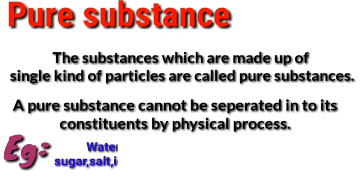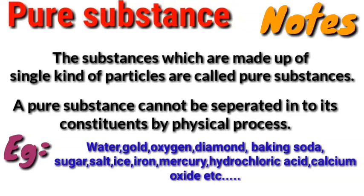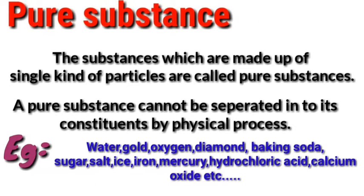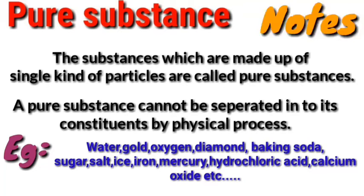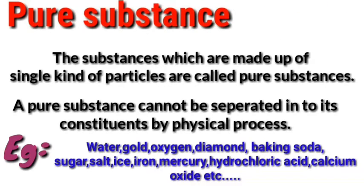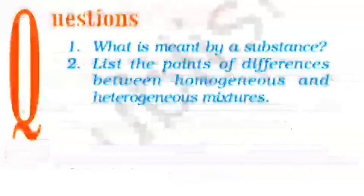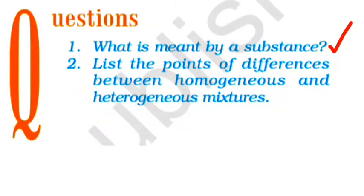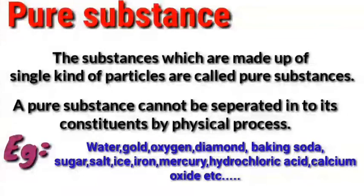Examples of pure substances include: water, gold, oxygen, diamond, baking soda, sugar, and salt. We call these pure substances. What does it mean by a pure substance? It means the elements and compounds — elements, compounds, and their details and differences. After that, let's move on to the next topic.